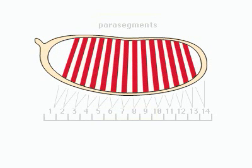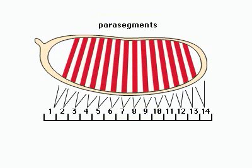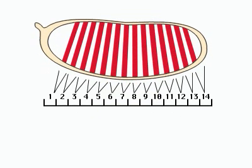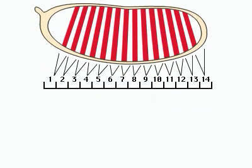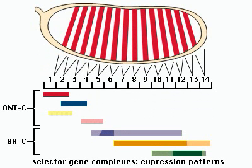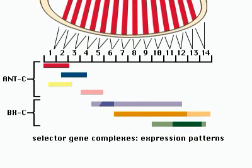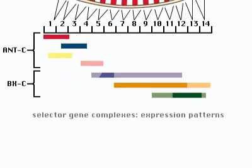Pair-rule genes, along with segment polarity genes, define 14 parasegments of the embryo. Selector genes regulate development within each pair-rule segment, determining the corresponding adult body structures.